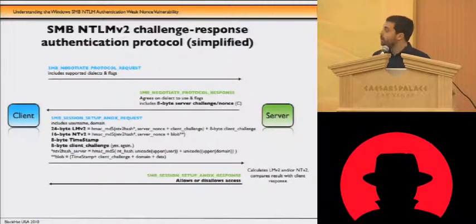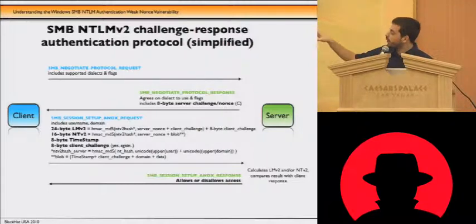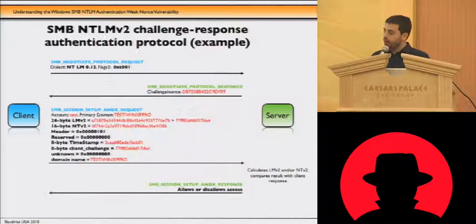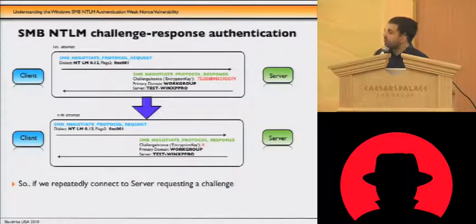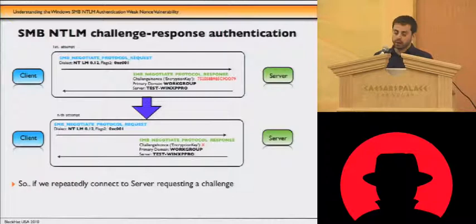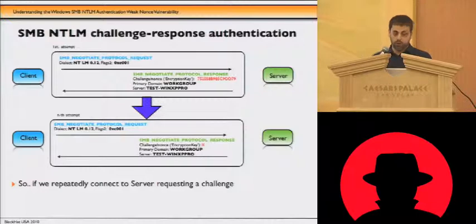NTLM version two is practically the same. The only thing that changes is how the client calculates the response sent back to the server; it works the same way overall. Since this is a challenge-response authentication protocol, the NANCEs generated by the server need to have the properties described — they need to be non-predictable and unique. Otherwise, we have a problem.